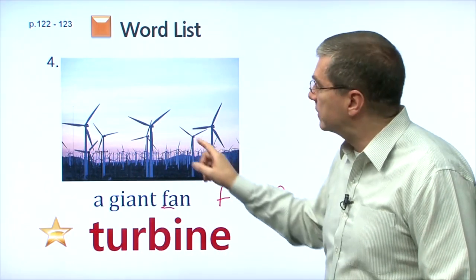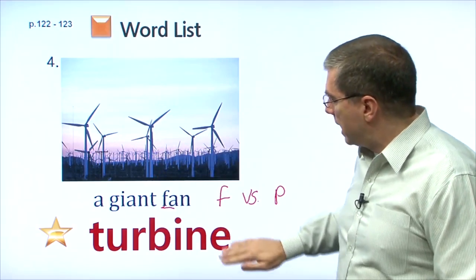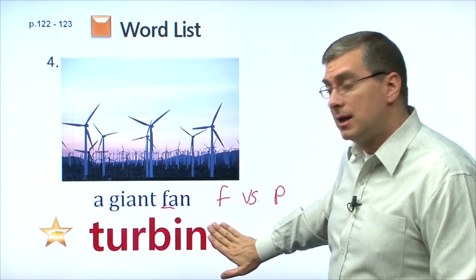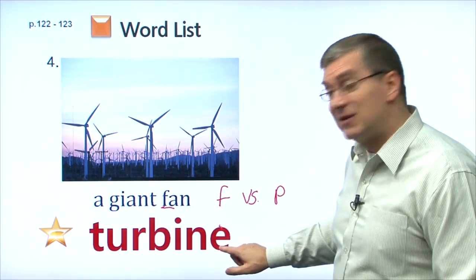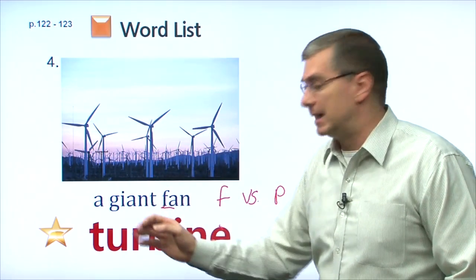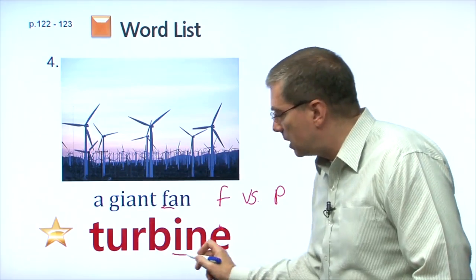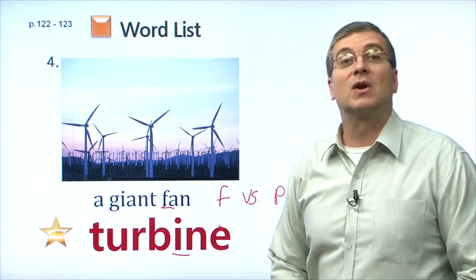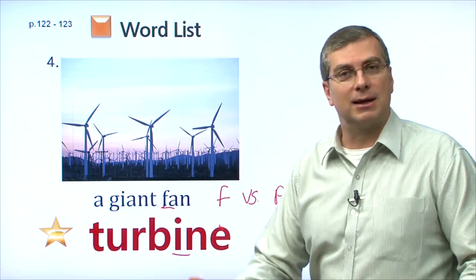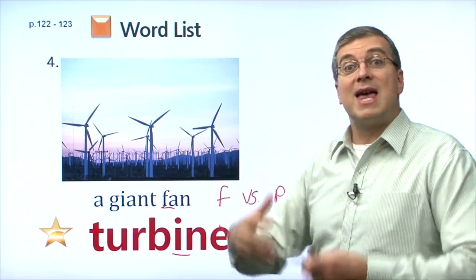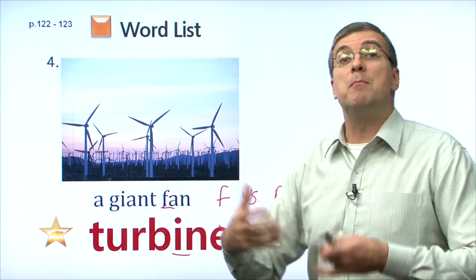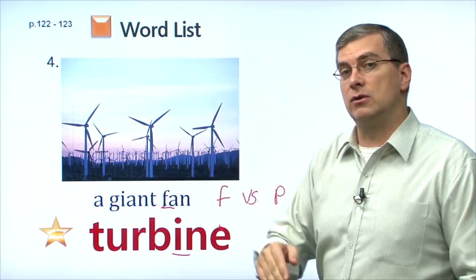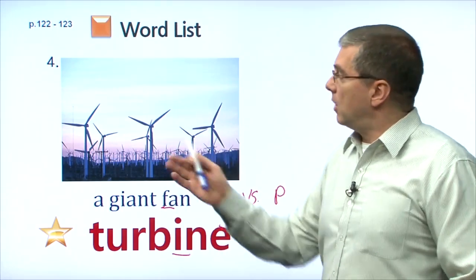Also be careful with pronunciation here. If there is no E at the end, it would be 'turbin,' but with the E, the I becomes a longer sound: turbine. Let's practice. Turbine. Okay, so these are turbines. They generate electricity. They turn wind energy into electricity.